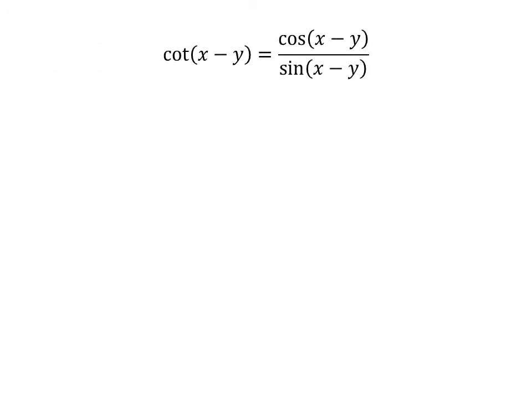We know cotangent of x minus y is equal to cosine of x minus y upon sine of x minus y.